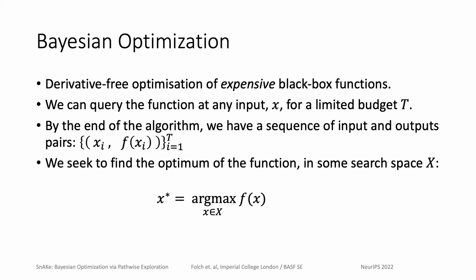Bayesian Optimization is a collection of methods specializing on the optimization of black box functions. It usually involves sequentially querying the function on a search space X for a limited budget T. By the end, we end up with a sequence of pairs consisting of inputs or experiment designs and outputs or experimental observations. The aim is for our best experiment to be close to the function's optimum.